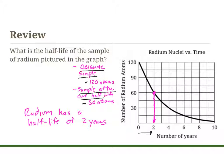In this case, the number of years in one half-life for radium is two years. If I added two more years, I could determine that the sample after a second half-life would be 30 atoms.